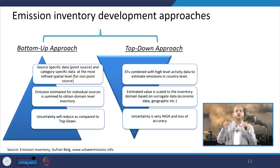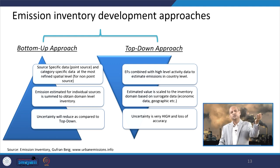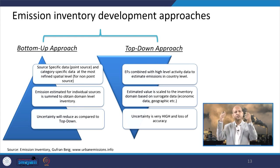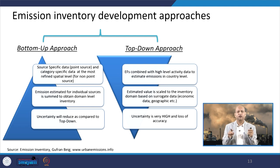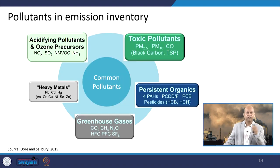The top-down approach uses surrogate parameters — for example, for a city you know how much diesel was sold, and there are thumb rules that this much diesel burning in transport results in this much emission of a particular pollutant. Alternatively, satellite data can be used for inverse modelling. Top-down approaches are sometimes coarser and not as detailed as bottom-up. But for preliminary decision making, the top-down approach can be quicker.